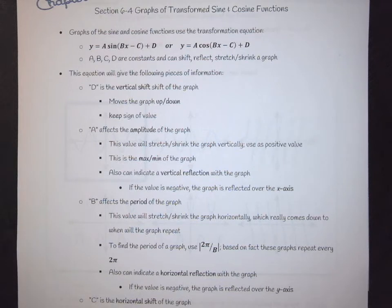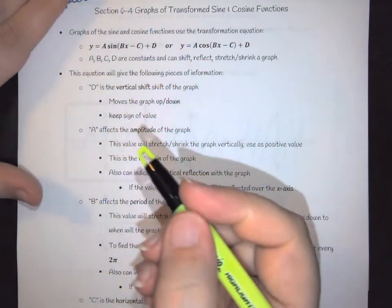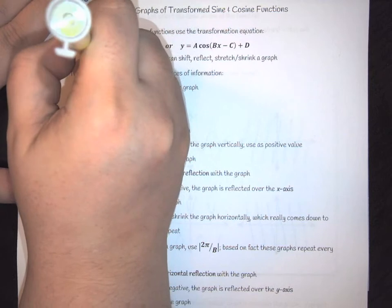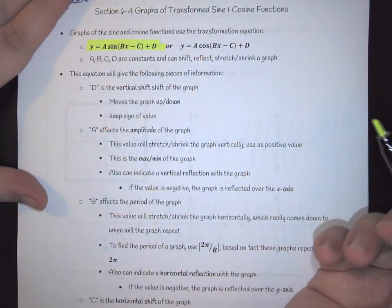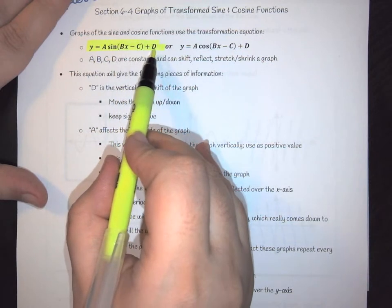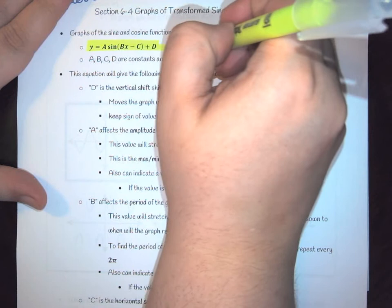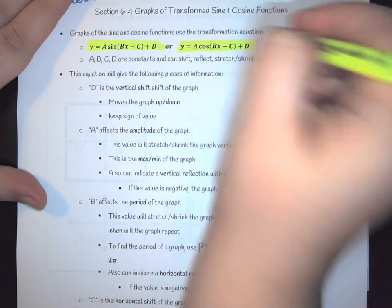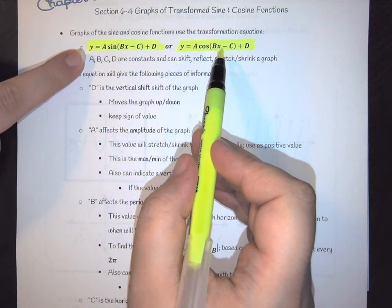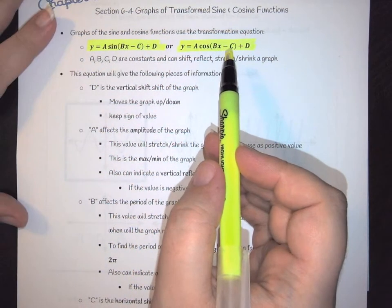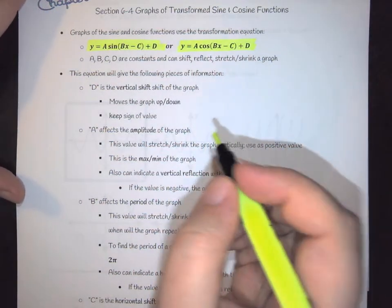To start off, we have to know there's a base equation to pull from. We have two versions: the first is a·sine(bx − c) + d, and then it looks identical for cosine — the only difference is the word cosine instead of sine. This is your standard form. Each of these letters — a, b, c, and d — have their own meanings that you have to keep track of.